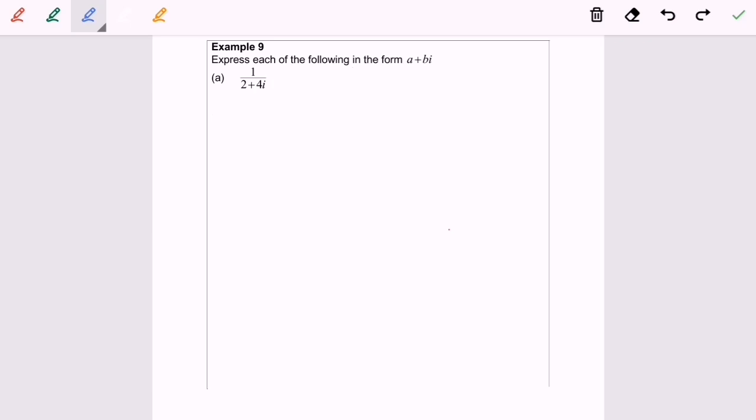Hello everyone, so now I'm going to discuss topic 1.2 Complex Numbers, Example 9. The question asks us to express 1 over 2 plus 4i in the form of a plus bi.